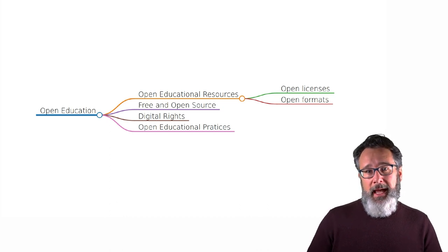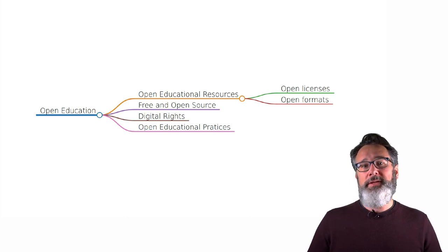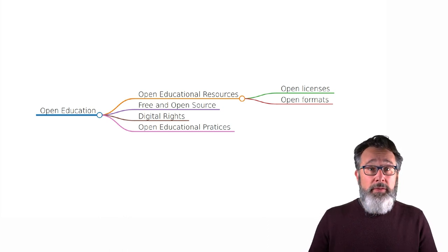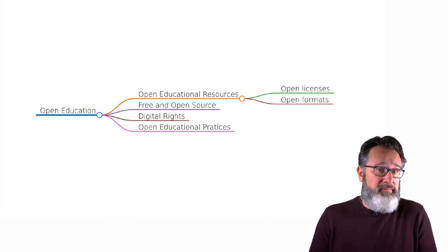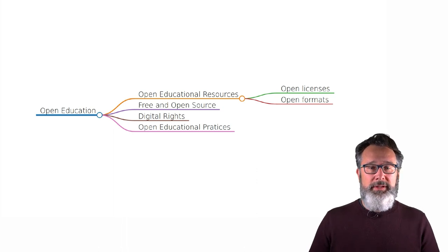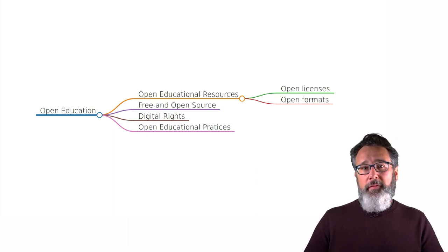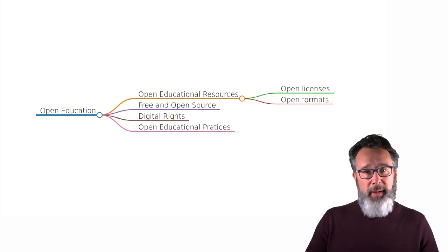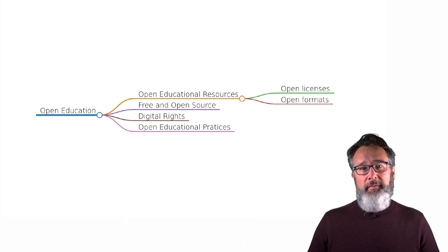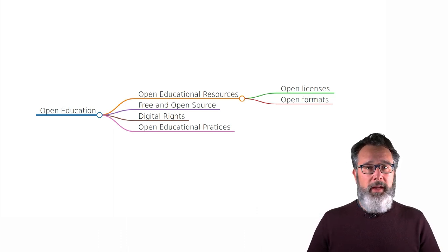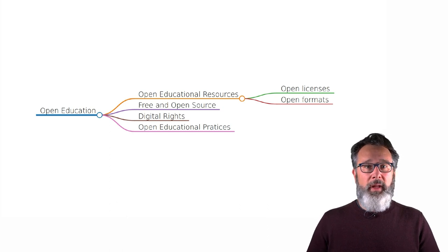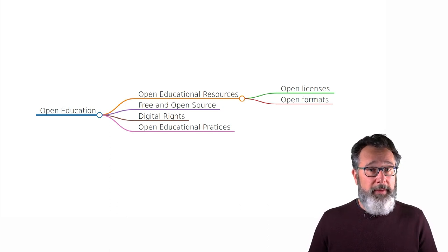One of the easiest ways to engage with open formats is to use free and open source software, which you can generally download and install for free, and they use open formats from the start. If you use free and open source software to create a video, you can share your source files with someone else and they'll be able to pick up where you left off and continue working on that video or document, because they're using software that uses the same formats — and these software can be downloaded and used for free.